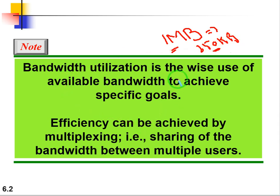In telecommunications we use bandwidth in microwave and satellite communication. We can distribute bandwidth using frequency division multiplexing, wavelength division multiplexing, or time division multiplexing. Methods like FDMA and TDMA are used to distribute bandwidth among users.